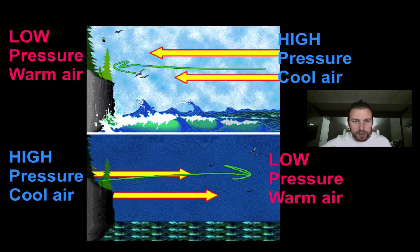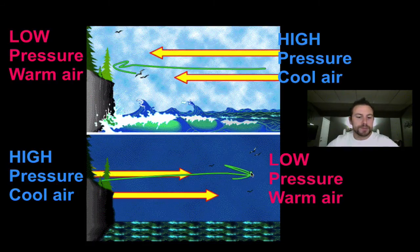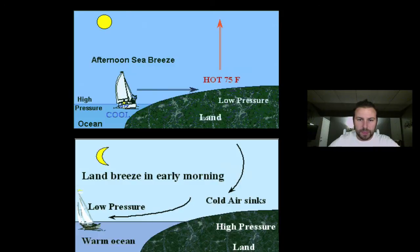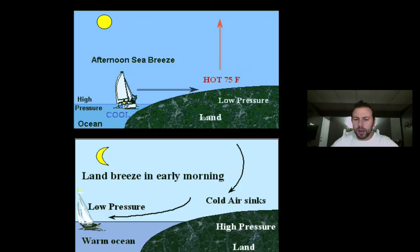Just like we said, winds go from high to low pressure. During the day we have our sea breeze, and at night we have our land breeze. Here's another diagram that adds temperatures and shows the pressures, and once again it covers both night and day — our sea and land breezes.